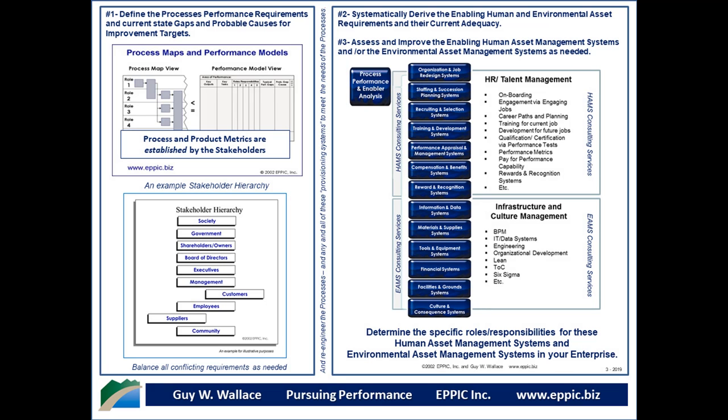Once we understand the process performance and enabler requirements through our analysis, we can begin to look at the provisioning systems within an organization. On the HR side, those might include organizational and job design and redesign systems, staffing and succession planning systems, recruiting and selection systems, training and development systems, performance appraisal and management systems, compensation and benefit systems, and reward and recognition systems.